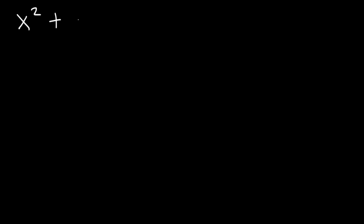Now consider this equation: x squared plus y squared plus 8x minus 6y plus 21. This is an equation of a circle in non-standard form. Given this equation, we need to put it in standard form in order to graph the circle.